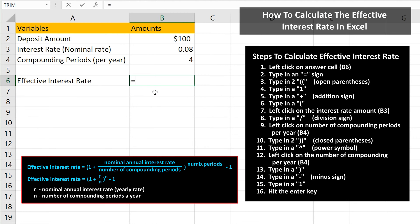Next, type in an equal sign, then type in two open parentheses. Following the formula, type in a 1, followed by an addition sign. Type in open parentheses. From here, we need to left-click on the stated or nominal interest rate, cell B3.